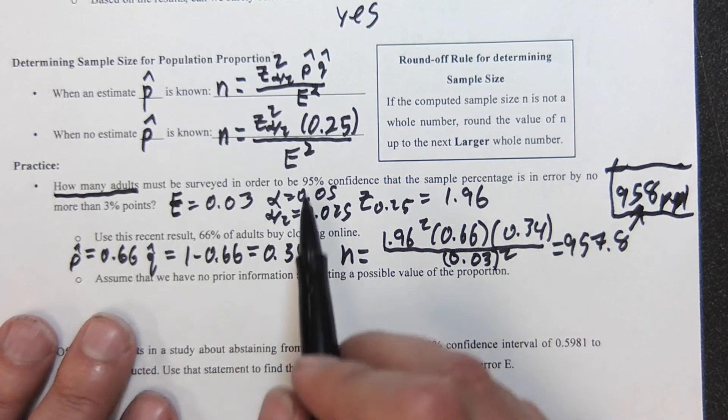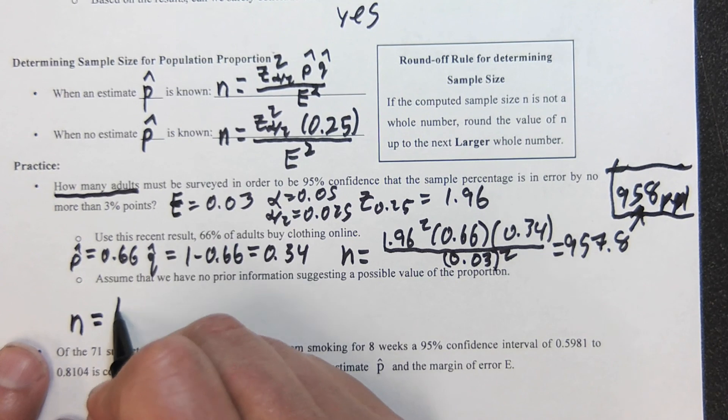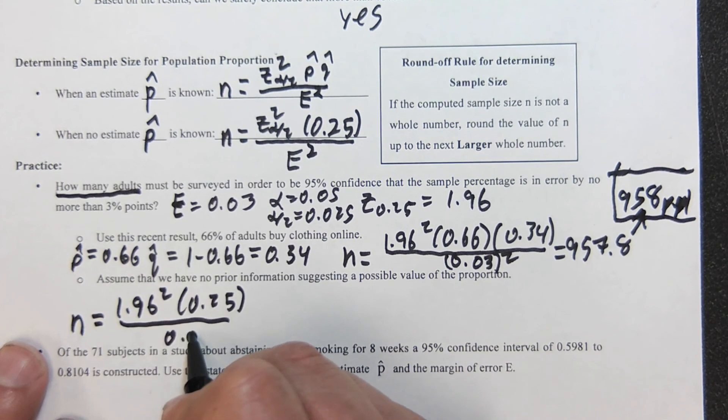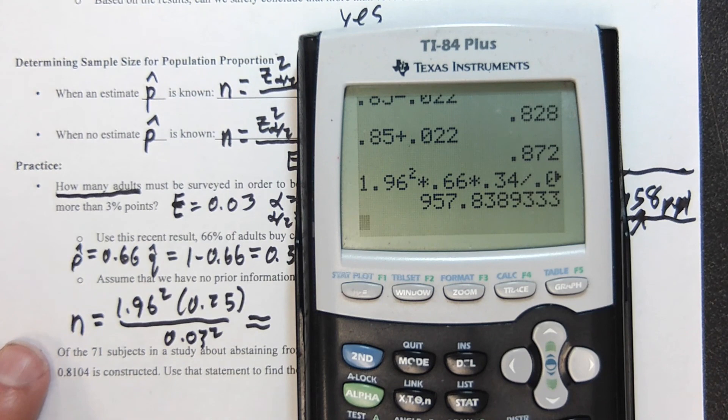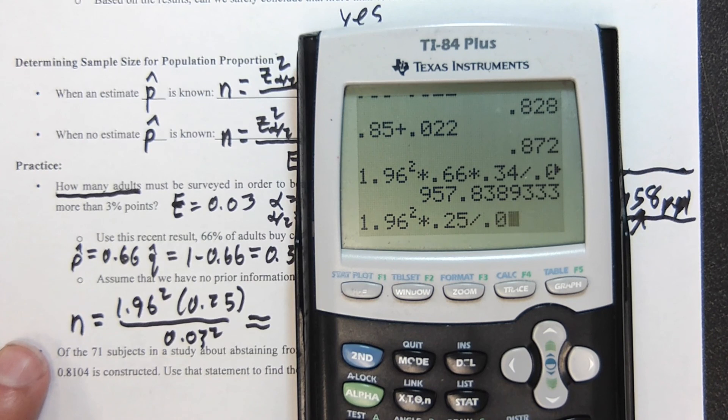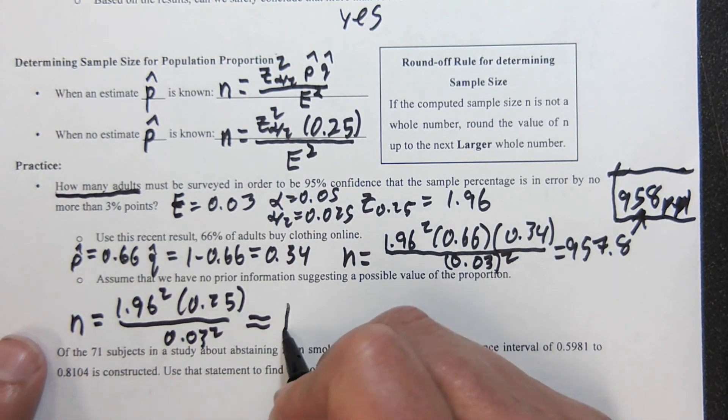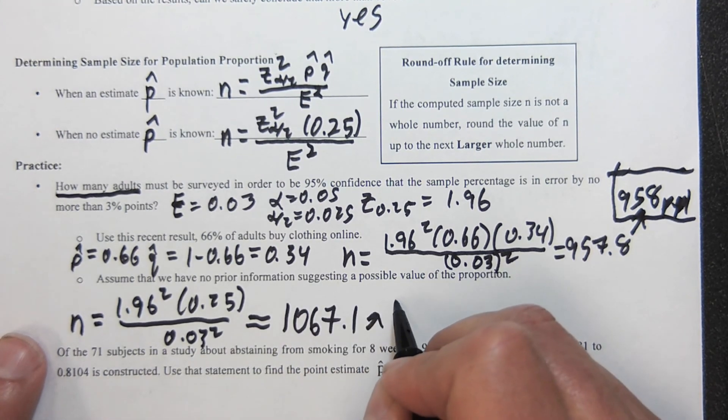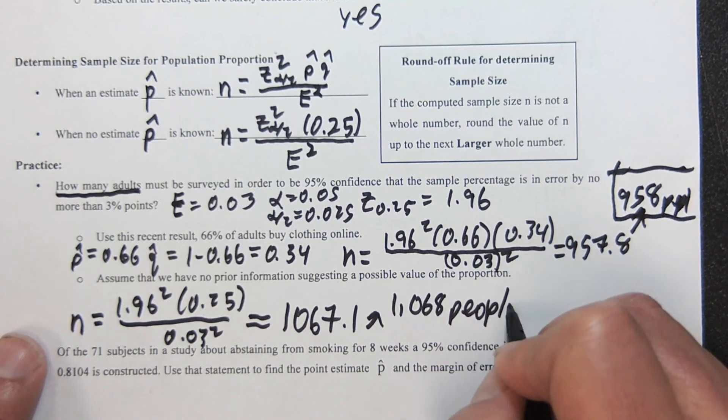Now let's say we have no prior information. Now we're here—no estimate is known—so we're going to redo this: n equals 1.96 squared times 0.25 this time over 0.03 squared. It's going to be higher because we don't have any other data to base it on. And again we always round up, so this is 1068 people, which is what that's supposed to say.